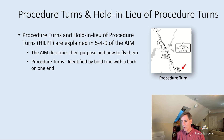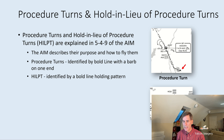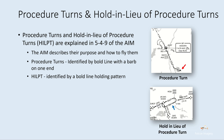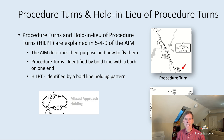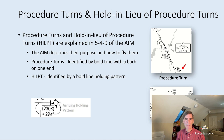Procedure turns are identified by bold lines with a barb on one end, as you see here by the red arrow. The hold in lieu of procedural turn is identified by a bold line holding pattern, as you can see by the blue arrow. Procedural holds are identified by the bold circle or bold racetrack, not to be confused with the dotted or dashed hold associated with a missed approach, or the thin solid line associated with an arrival hold.